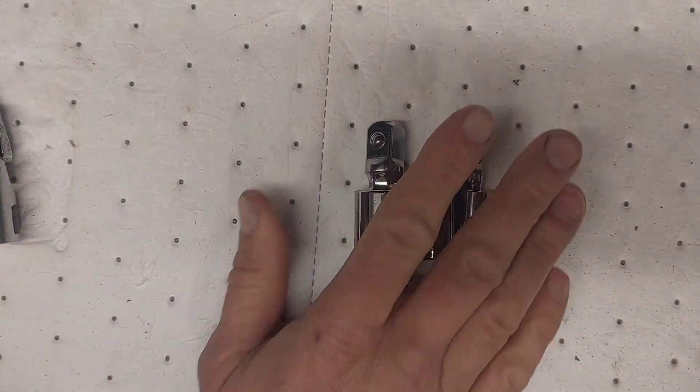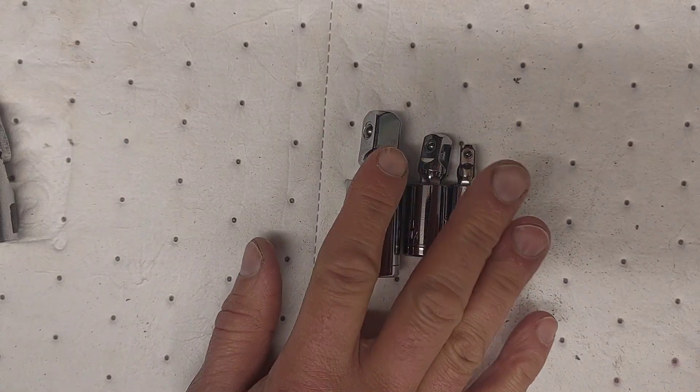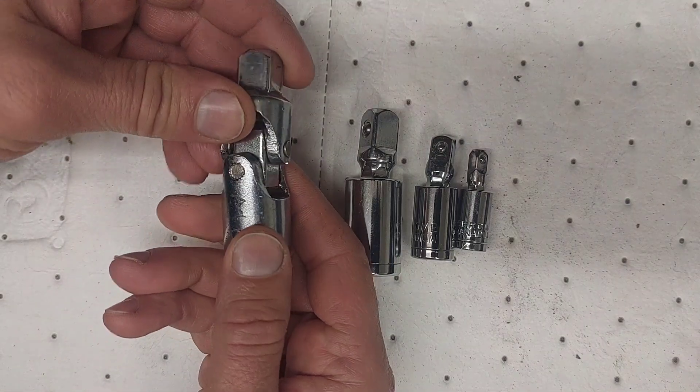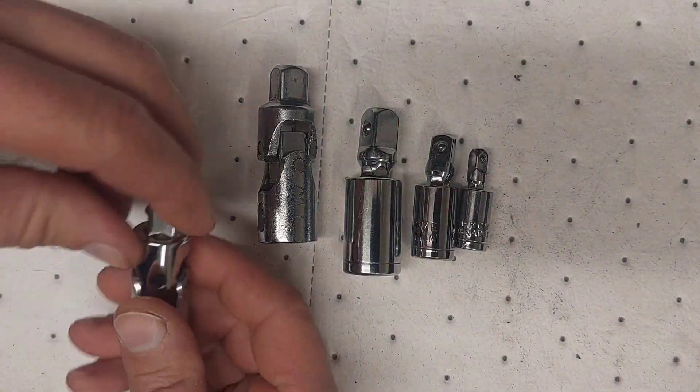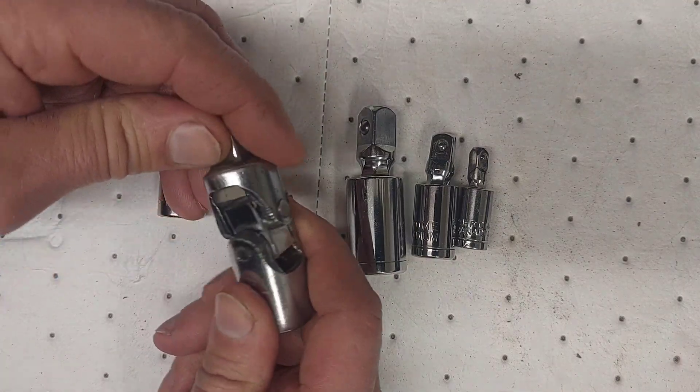I wanted to get these because I don't have any universals like this in chrome. I only have them in impact, and the only ones I have are these dog bone style universals and I really don't like the dog bone ones.